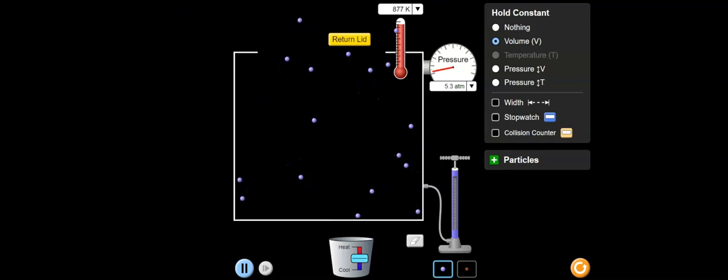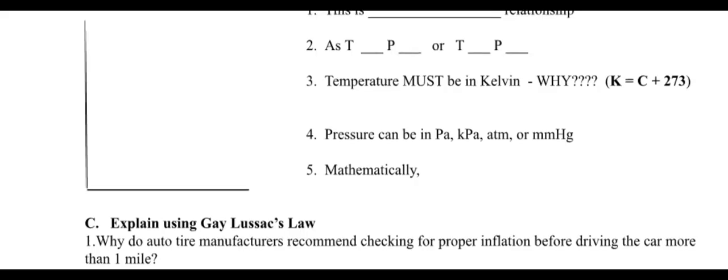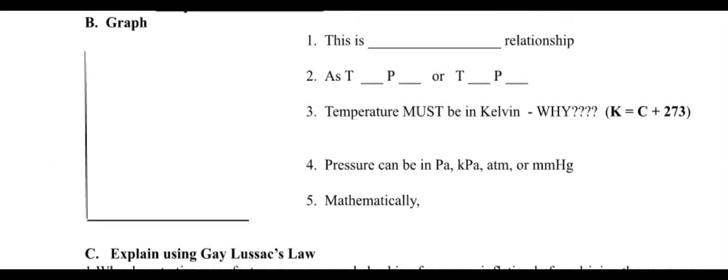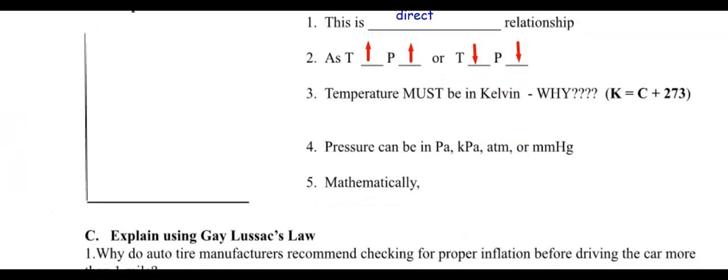Let's see what our notes have to say. So what kind of relationship is this going to be? What do we say? As temperature went up, pressure went up. That's direct. Or you can also say if temperature went down, pressure went down.